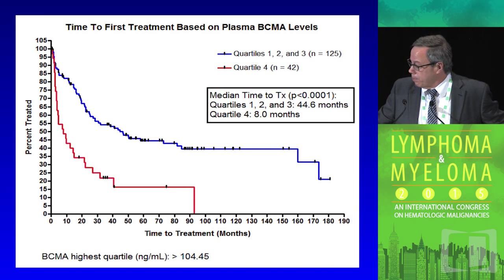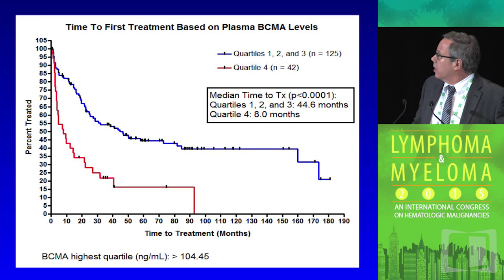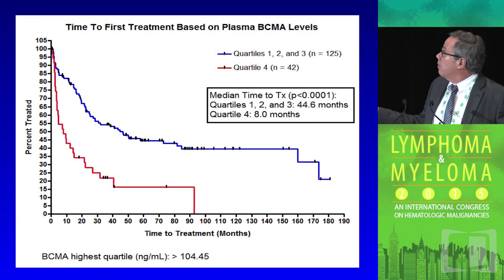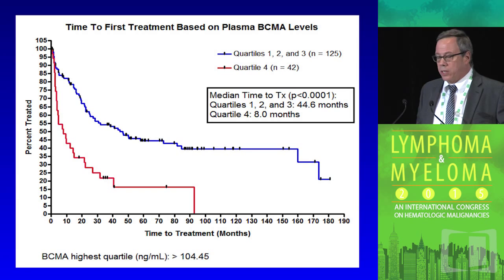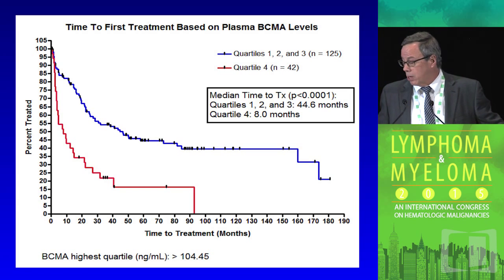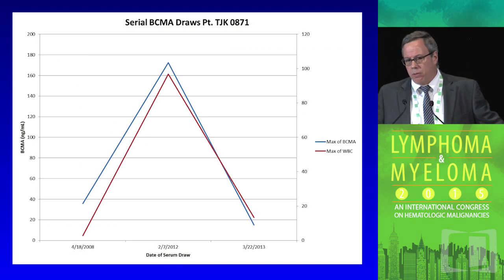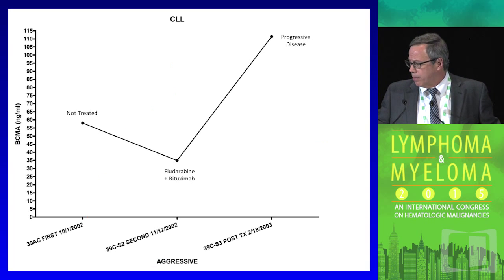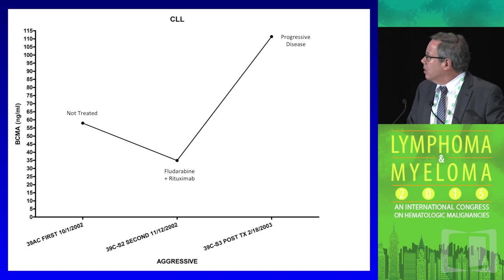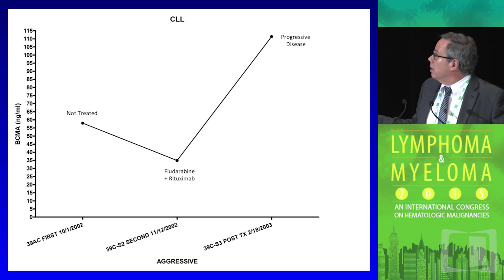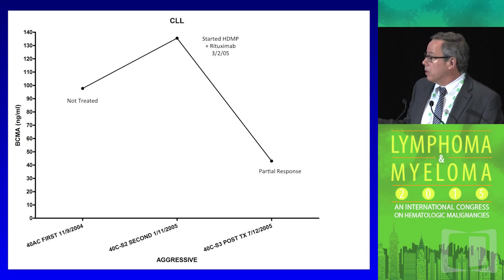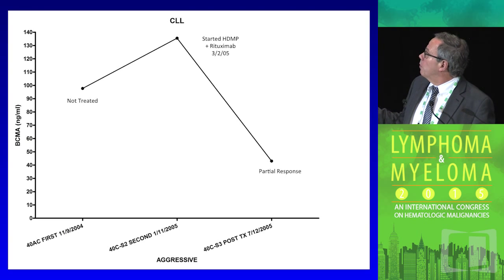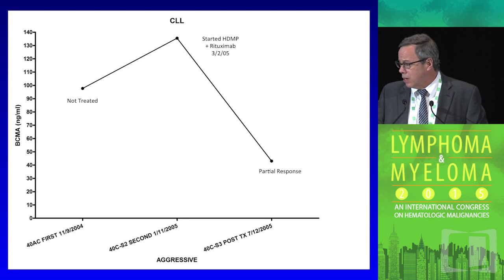BCMA also predicts time to first treatment in CLL — the highest 25% require treatment much more rapidly than the lower three quartiles. It correlates directly with white blood cell count, which is largely lymphocytes. In individual patients, a patient who was untreated and then started on fludarabine and rituximab showed BCMA rise from 45 to 115 on progression. A patient with a partial response on high-dose melphalan and rituximab started at 140 and dropped to about 50. Every patient so far has been consistent.